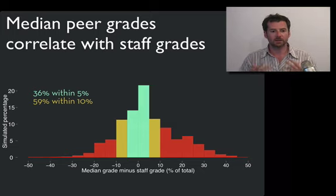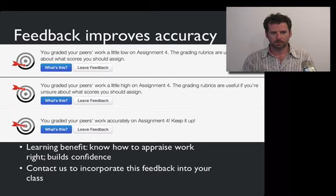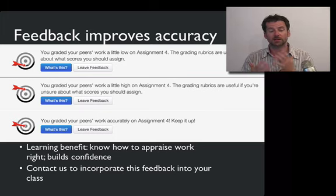We found that the median peer grade correlates very strongly with staff grades. Sixty percent of students in our simulation received grades within 10 percent of the staff assigned grade. We thought that was a pretty good job for the first run, but felt we could do better. In the second iteration of the HCI Online class, we added just one bit of feedback for each student about whether they were grading high, low, or just right. We found that this simple feedback improved students' subsequent accuracy, so giving students that feedback is really important.